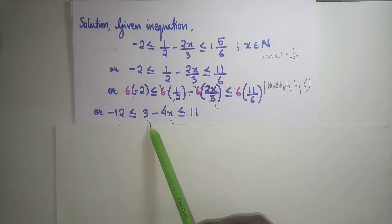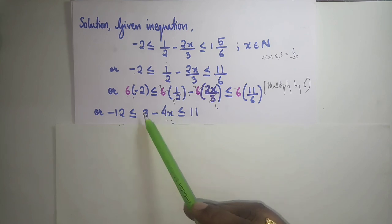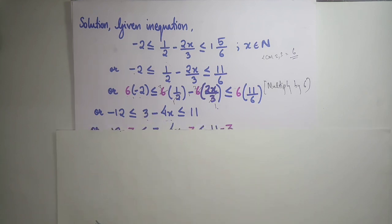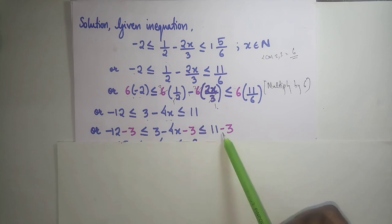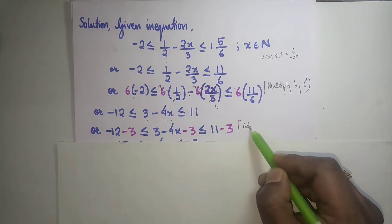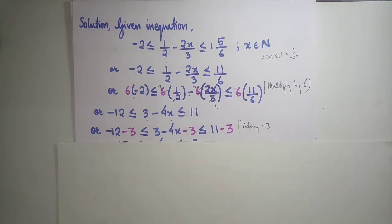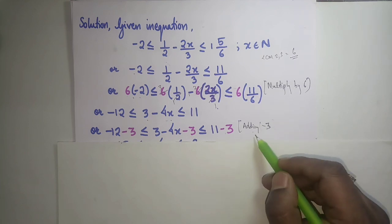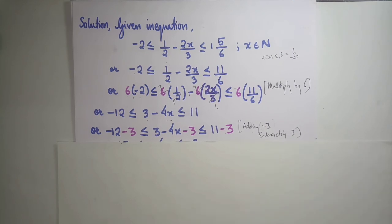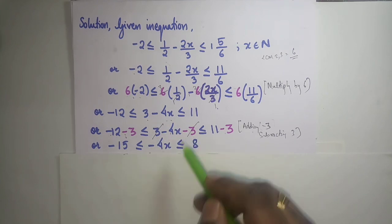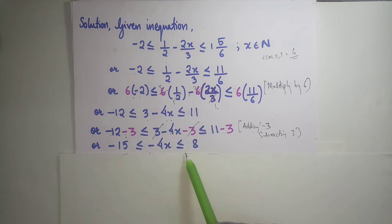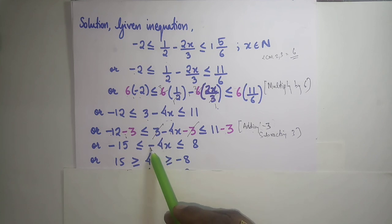Now we need to make x alone. The 3 is disturbing us, so subtract 3 from all sides: −12 − 3 ≤ 3 − 4x − 3 ≤ 11 − 3. The 3s cancel in the middle, giving −15 ≤ −4x ≤ 8.